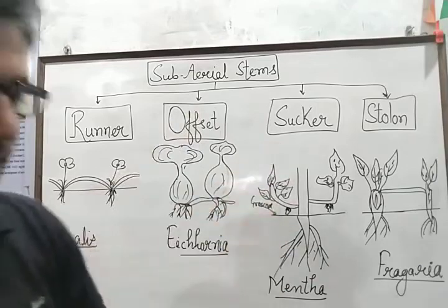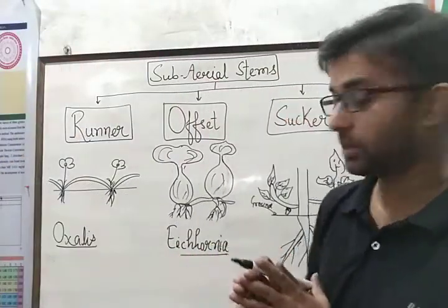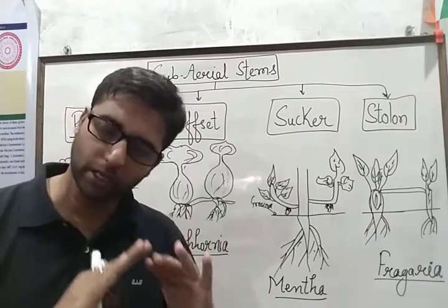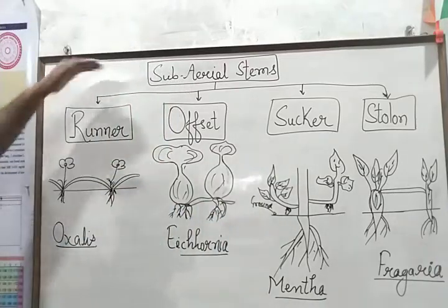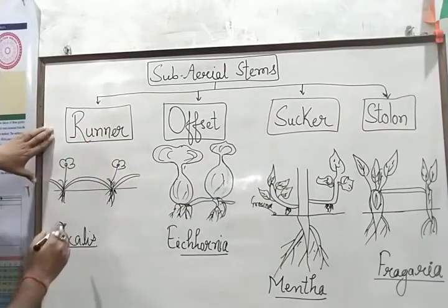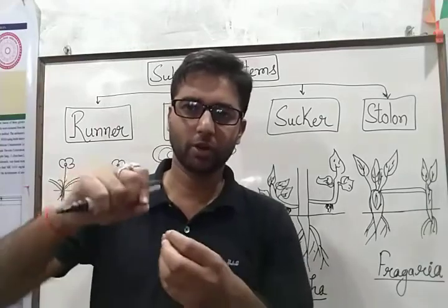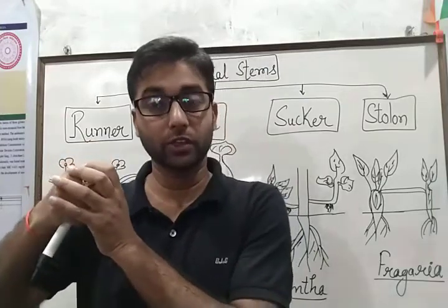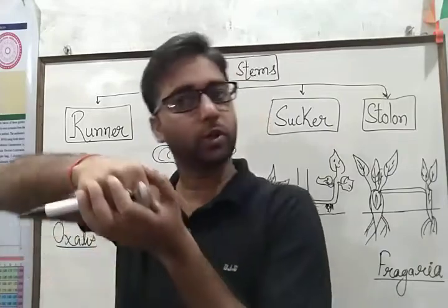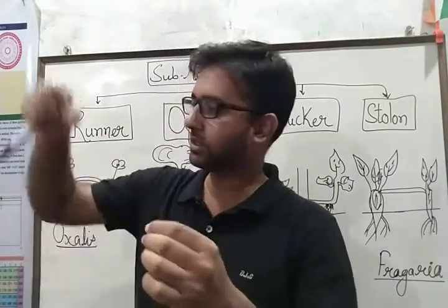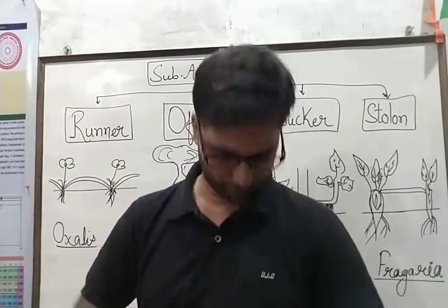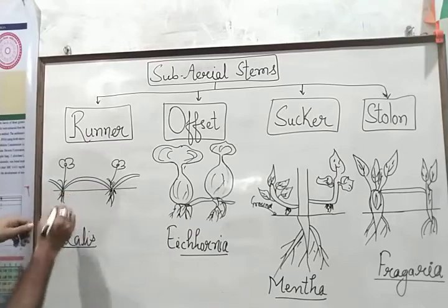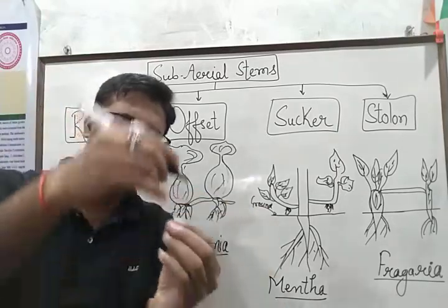Now, move to the sub-aerial stem — vegetative propagation by sub-aerial stems. Sub-aerial stems are those stems which are slightly above the ground but touch the ground at least. The first structure in the sub-aerial stems is runner. Many times when you are playing in the ground, you pull out some grasses — what we call in Hindi doob grass. When you pull this, you feel that at a particular distance they are dipped inside the earth.